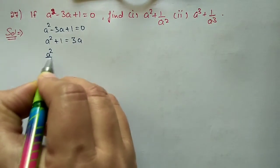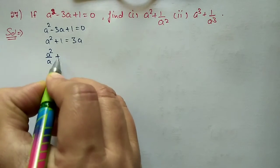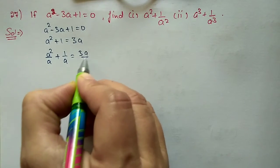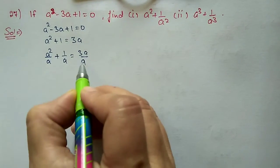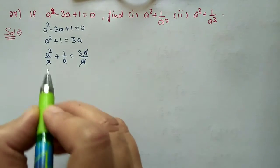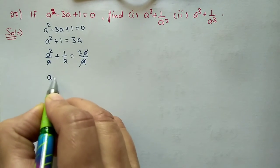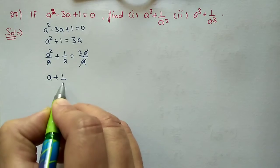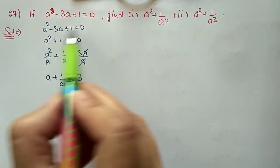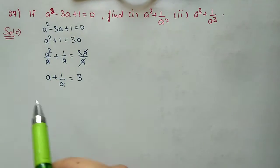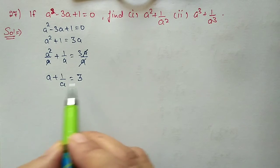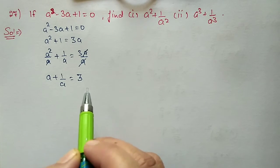So a²/a + 1/a = 3a/a. The a terms cancel, giving a + 1/a = 3. We have just changed the form of the same equation. Now we will do the squaring of this equation.